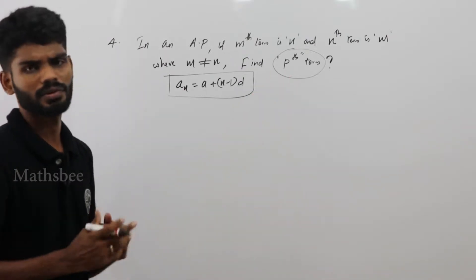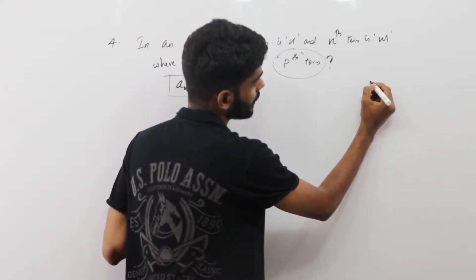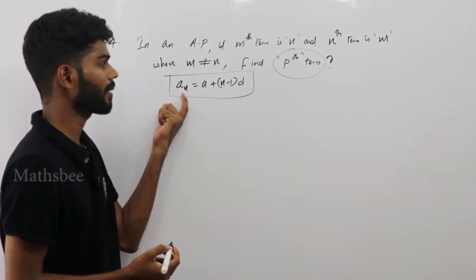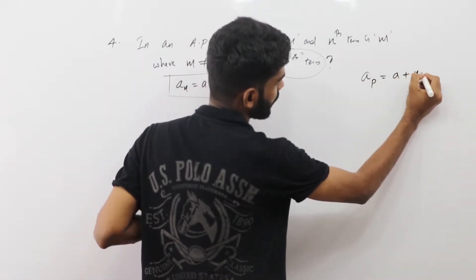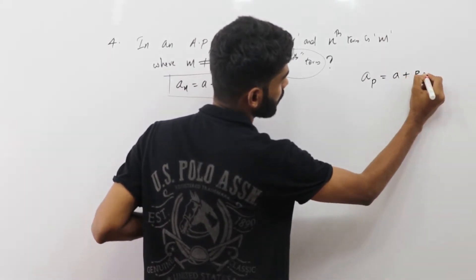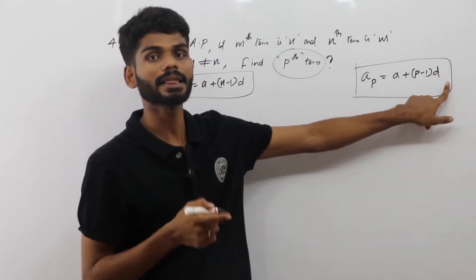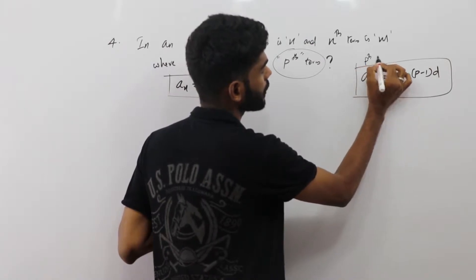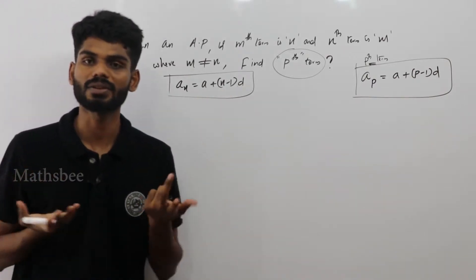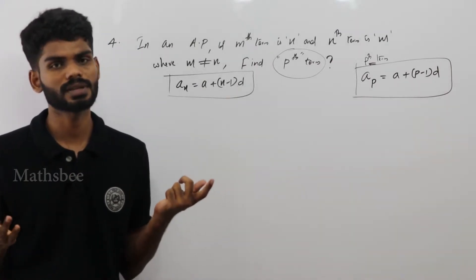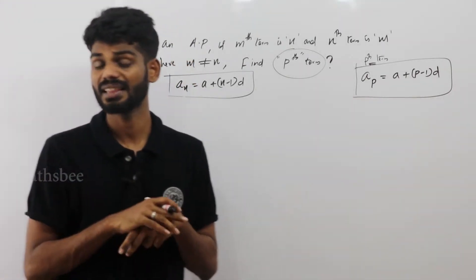First, we need to find out the Pth term. The Pth term follows the formula A plus (N minus 1) times D. We can use any variable — N, A, P, C, Z, or M. Any variable can be used. Generally, we need to find the Pth term.